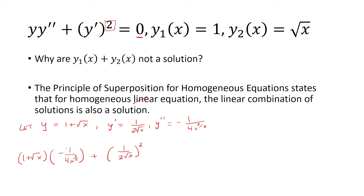So this one we're going to distribute the negative 1 over 4x to 3 halves power. These two are going to cancel and we'll be left with negative 1 over 4 times x to 3 halves power. Clearly this does not equal 0. So the sum is not a solution.